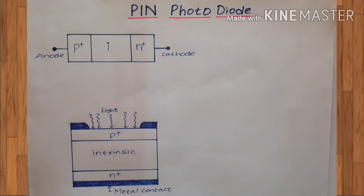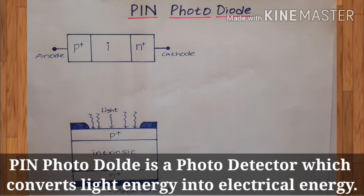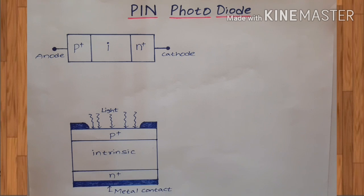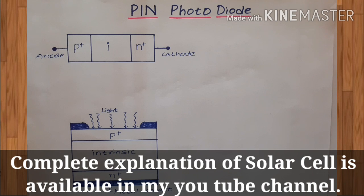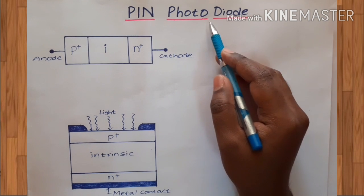Hello students, today I will explain the concept of PIN photodiode, which is nothing but a photo detector. Broadly, photo detectors are classified into three types: solar cell, PIN photodiode, and avalanche photodiode. In the present lecture I will concentrate more on the PIN photodiode.